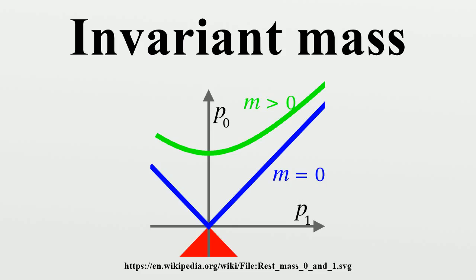If a center of momentum frame exists for the system, then the invariant mass of a system is simply the total energy divided by the speed of light squared. In other reference frames, the energy of the system increases, but system momentum is subtracted from this, so that the invariant mass remains unchanged. Systems whose four-momentum is a null vector have zero invariant mass, and are referred to as massless.